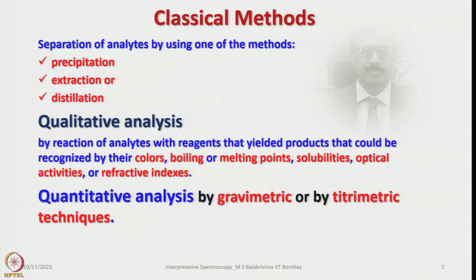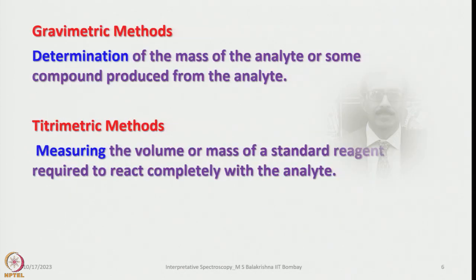We can perform quantitative analysis in several methods. The separation of analytes can use methods like precipitation, extraction, or distillation. Qualitative analysis is done by reacting analytes with reagents that yield products recognizable by their color, boiling or melting points, solubilities, optical activities, or refractive indices. Quantitative analysis can be performed by either gravimetric or titrimetric methods. In gravimetric method, we determine the mass of the analyte or a stoichiometric compound. In titrimetric method, we measure the volume or mass of a standard reagent required to react completely with the analyte.